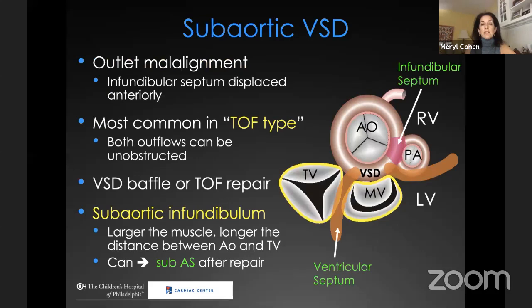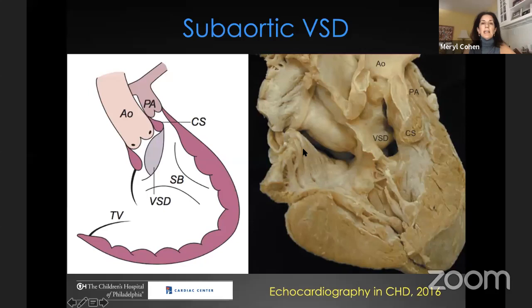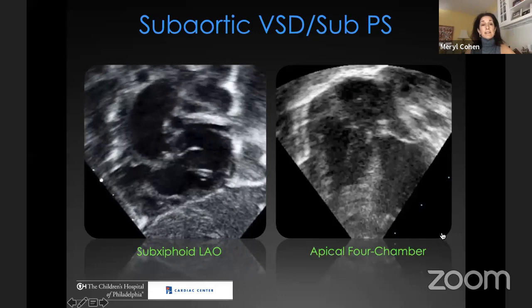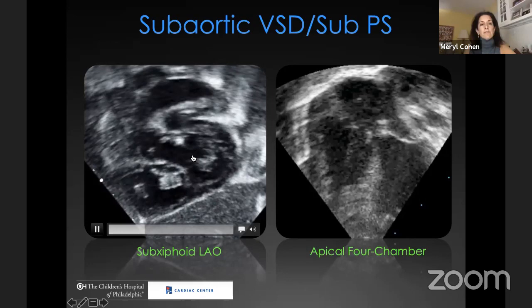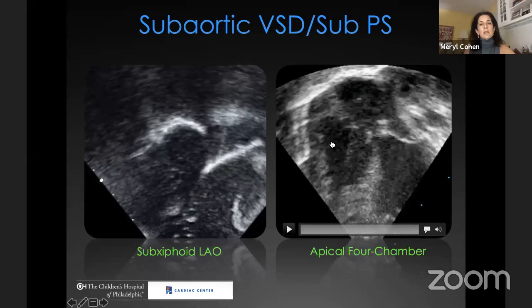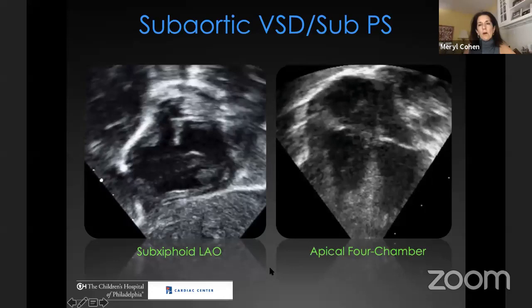With regard to the subaortic infundibulum: the larger the muscle, the longer the distance between the aortic valve and the tricuspid valve, which can lead to subaortic obstruction after repair. From the pathology textbook, you can see the VSD in the Y of septal band, the conal or infundibular septum impinging on the pulmonary outflow tract, and the aorta sitting entirely over the right ventricle. Here is an echocardiographic example in a subxiphoid left anterior oblique view — sweeping through, you see the aorta first, closest to the VSD, and the pulmonary artery more anterior and quite small.